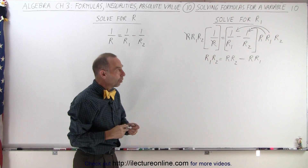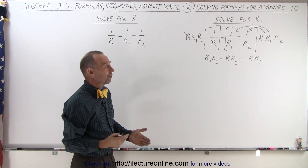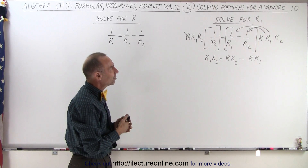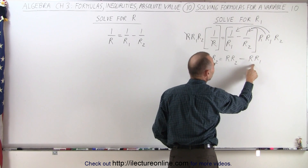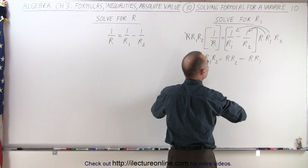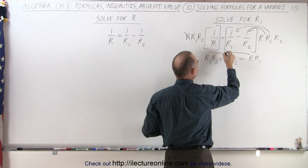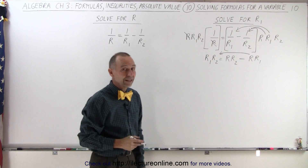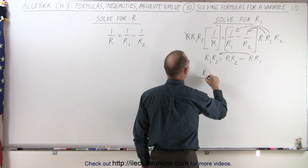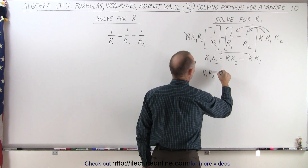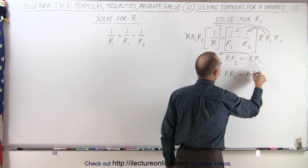Notice it almost doesn't matter what variable we're solving for — clearing fractions is always the first step. Now that fractions are gone, I see I'm solving for R1. There's an R1 on each side, so I move all R1 terms to one side. The term crosses the equal sign, so its sign changes from negative to positive. I end up with R1 times R2 plus R times R1 equals R times R2.